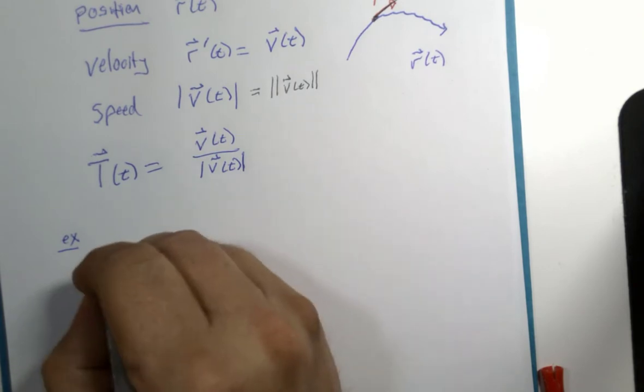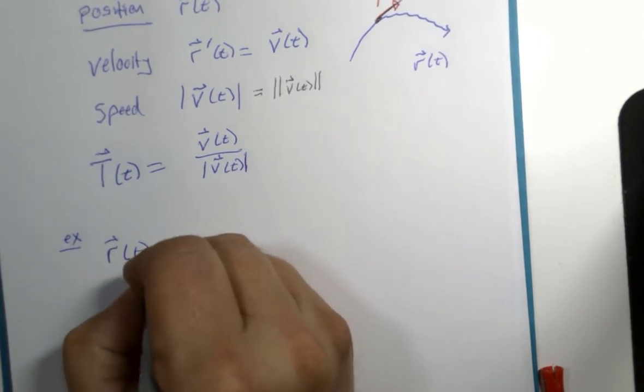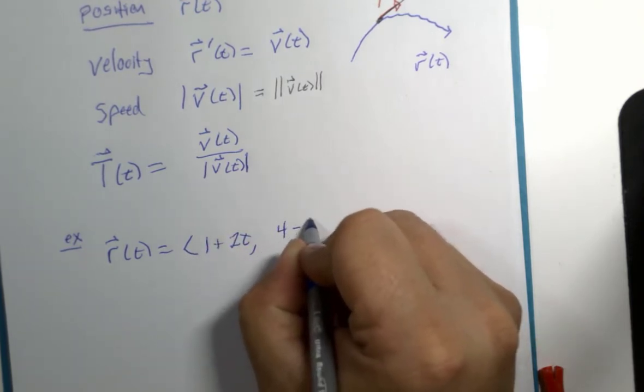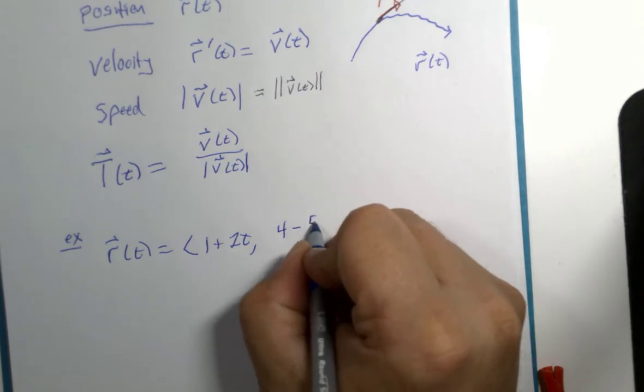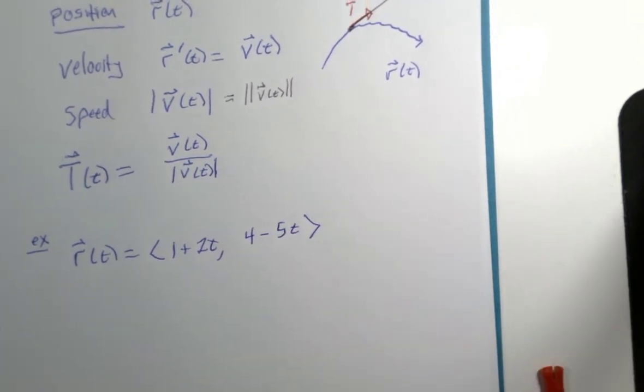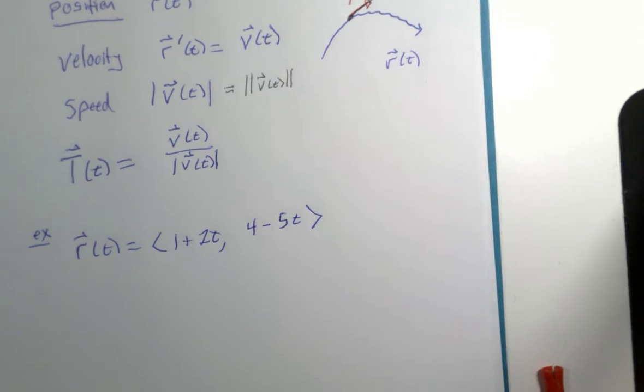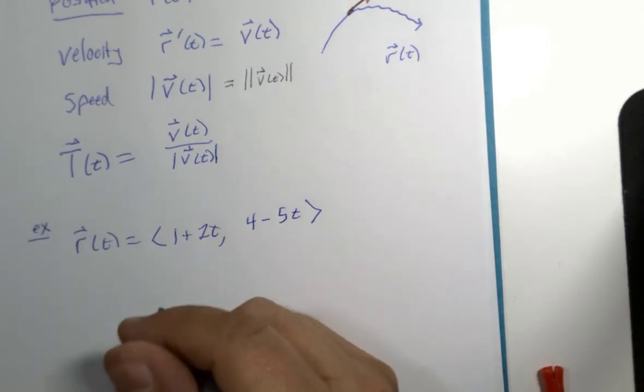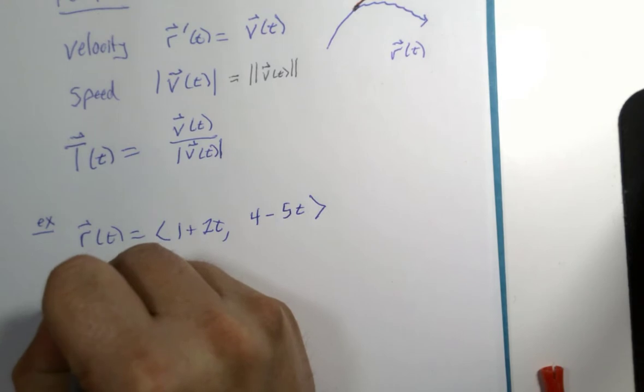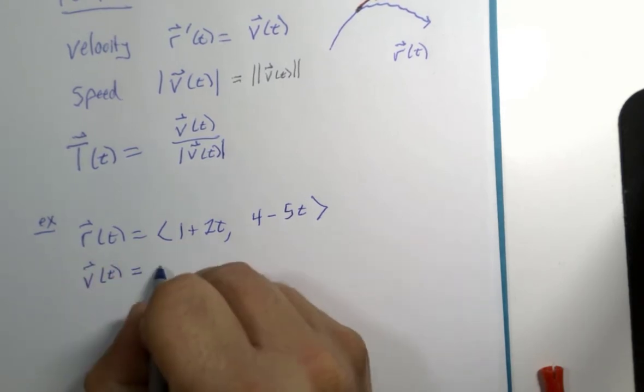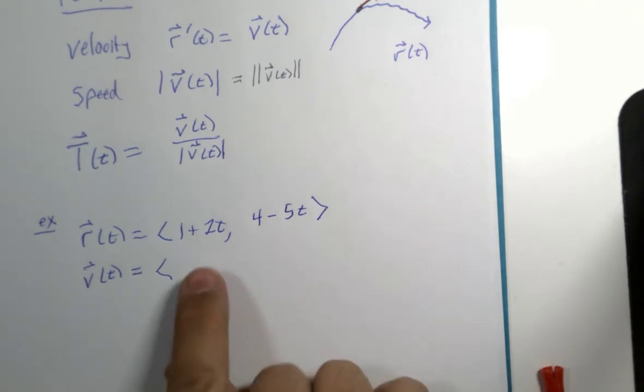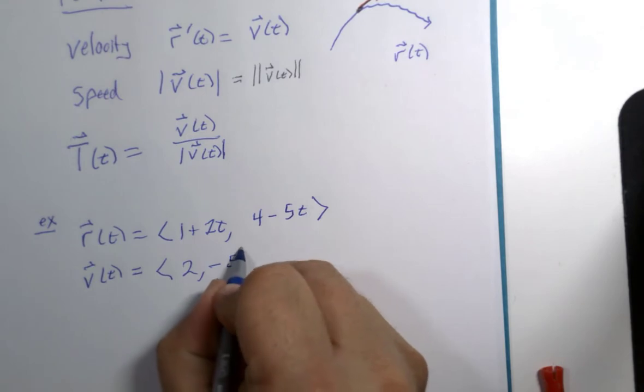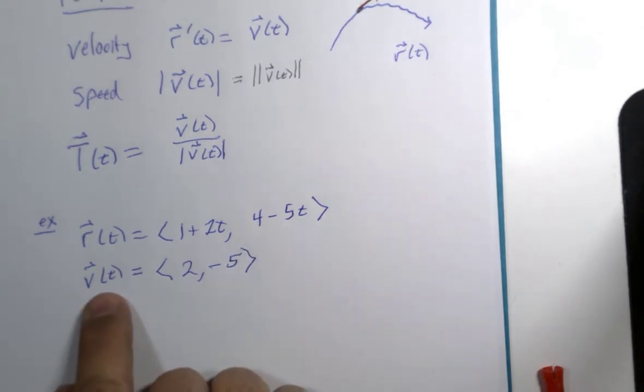First example: R of T is <1 plus 2T, 4 minus 5T>. Now, if we're only told to calculate the unit tangent vector, then all we would do is calculate the velocity vector. First derivative is 2, first derivative is negative 5.